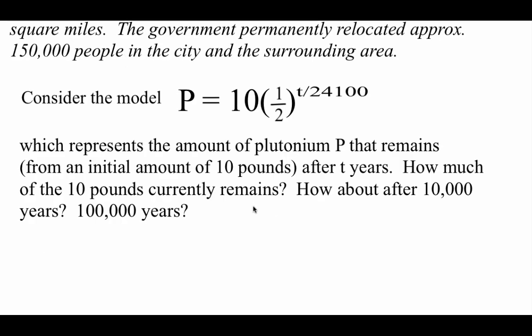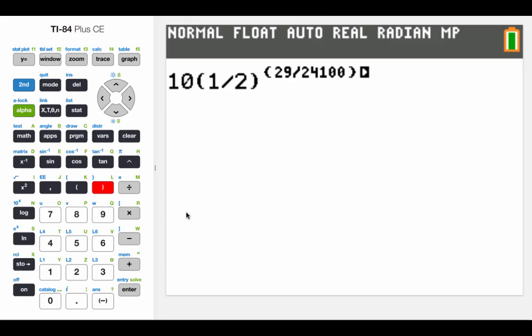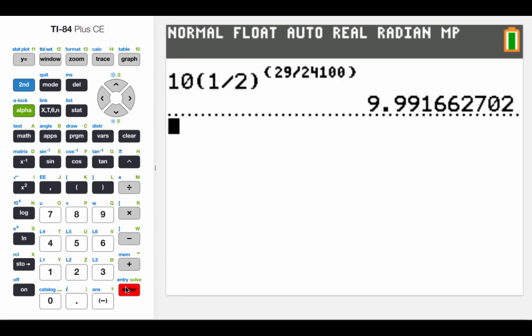To figure out how much plutonium is currently left, we first need to find our T value. Right now, it's the year 2015. This happened in 1986, so the T value we're going to work with is 29. So we'll go 10 times 1 half, plug in that 29 for our T value, divided by 24,100. And I'm just going to type this into my calculator right away. So I've actually already got this one typed in: 10 times 1 half to the power of 29, divided by 24,100. If I hit enter, it tells me there are 9.992 pounds left over from the original explosion.